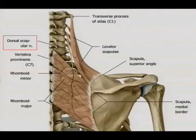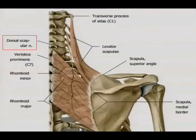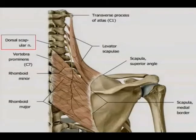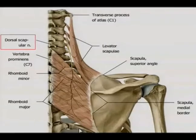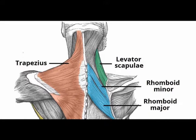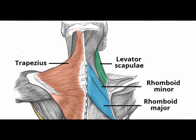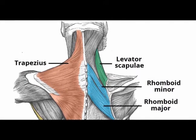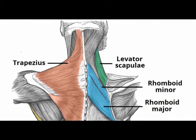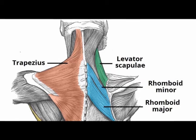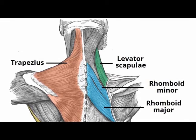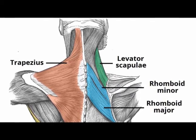It is innervated by the dorsal scapular nerve and the ventral primary rami C3 and C4. It is deep to the trapezius muscle in the lower aspect and deep to the sternocleidomastoid in its superior aspect.